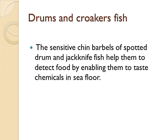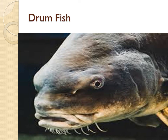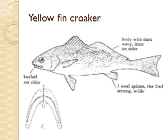In this slide you can see drums and croakers fish. Drums and croakers fish belong to the family Sciaenidae. The jackknife fish in this group has chin barbels — spotted drum and jackknife fish — which help them detect food by enabling them to taste chemicals in the sea floor. These fish are found in Brazilian or Caribbean areas.